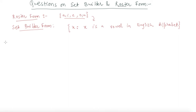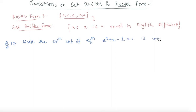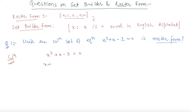Let's do some questions so it will be more clear how to write roster form and set-builder form. The first question given to us is: write the solution set of the equation x² + x − 2 = 0 in roster form. To proceed, we first solve the equation x² + x − 2 = 0.